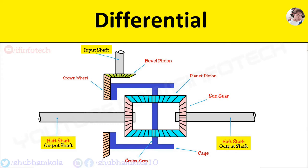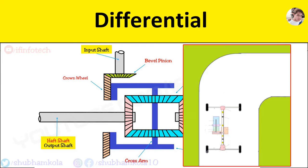The function of differential is used to split the power and send to driving wheels through two half-axle shafts. And it also allows driving wheels to turn by different amounts when vehicle goes on curved path.